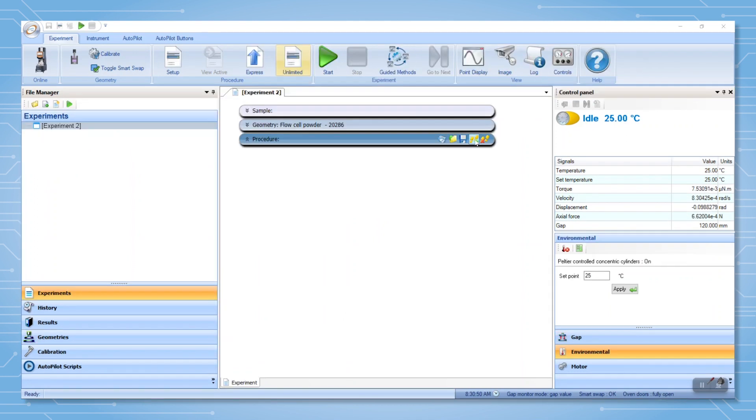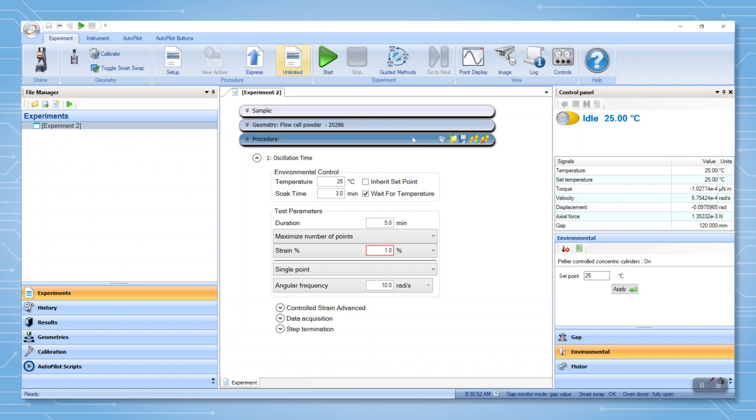To set up a powder flow temperature test, navigate to the experiment tab in TRIOS. Select powder in the test type drop down menu. This test type will only be displayed if a powder geometry is installed.